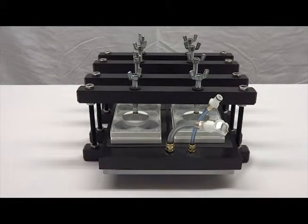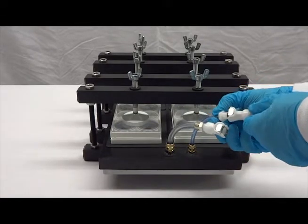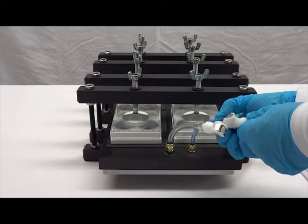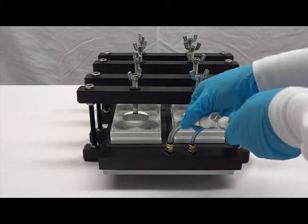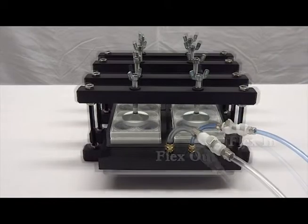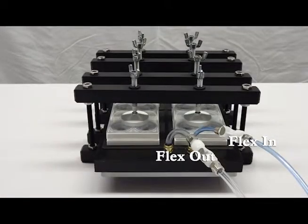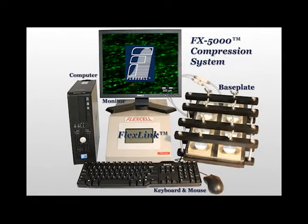Connect the FlexN tubing to the quick disconnect attached to the blue 1/4 inch or 6.4 millimeter tubing on the base plate. Connect the FlexN out tubing to the quick disconnect attached to the clear 3/8 inch or 9.5 millimeter tubing on the base plate. Your compression base plate is now ready for use.